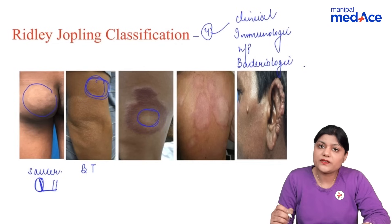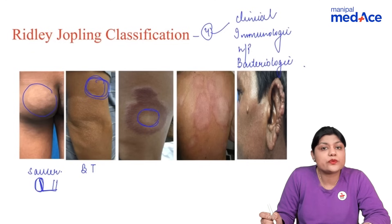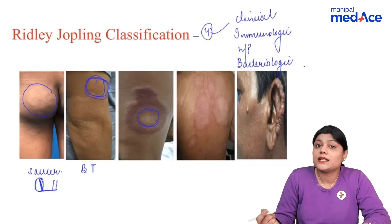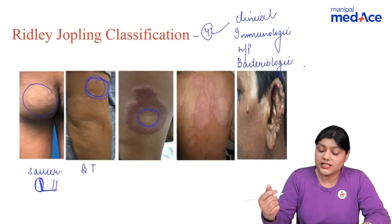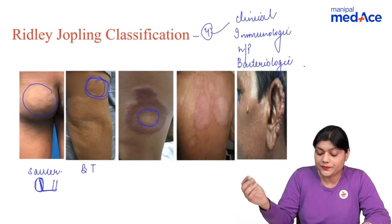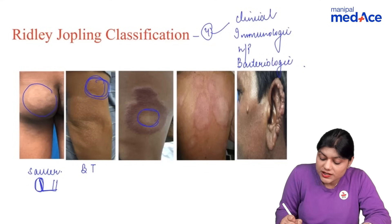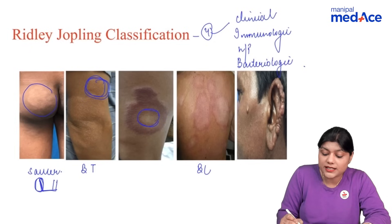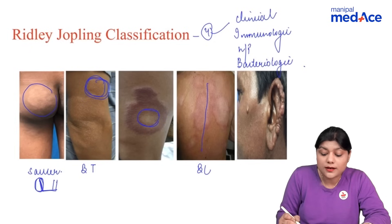The number of lesions keeps increasing as we move from the tubercoloid to the lepromatous pole. Nerve involvement also increases. Lesions change from well-defined to ill-defined. In borderline leprosy, the increased number of lesions can be punched-out and they cross the midline.